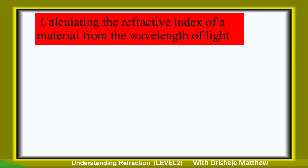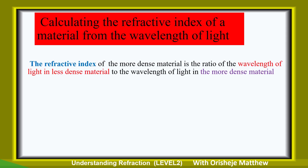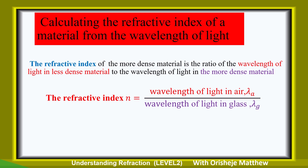Now let's calculate the refractive index of a material from the wavelength of light. The refractive index is defined as the wavelength of light in air divided by the wavelength of light in the more dense medium, for example glass. So the formula is: n equals lambda-air over lambda-glass.